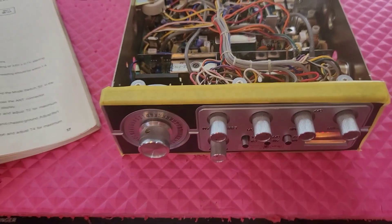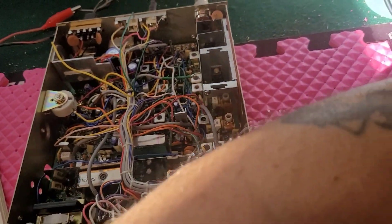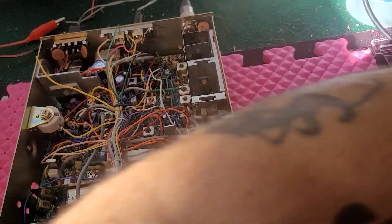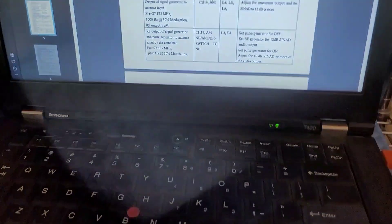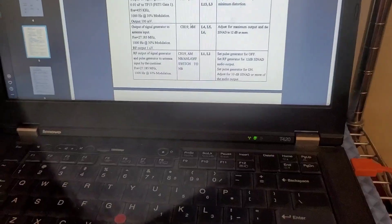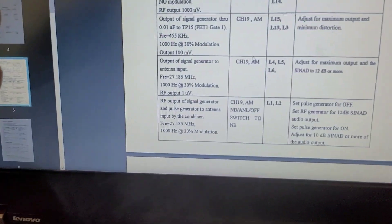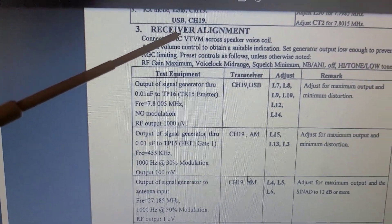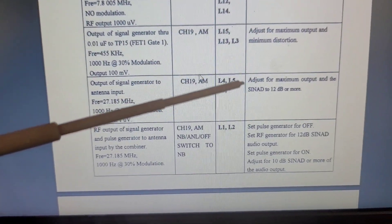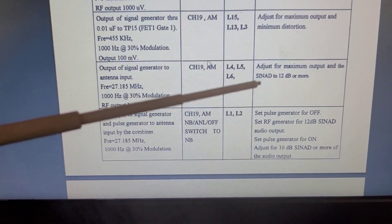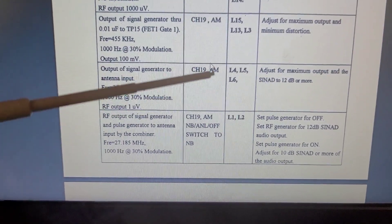When we go to this alignment procedure here for the Cobra 148 GTL, we can see that in the portion of the receiver alignment, we actually have steps to adjust for 12 dB of SINAD.